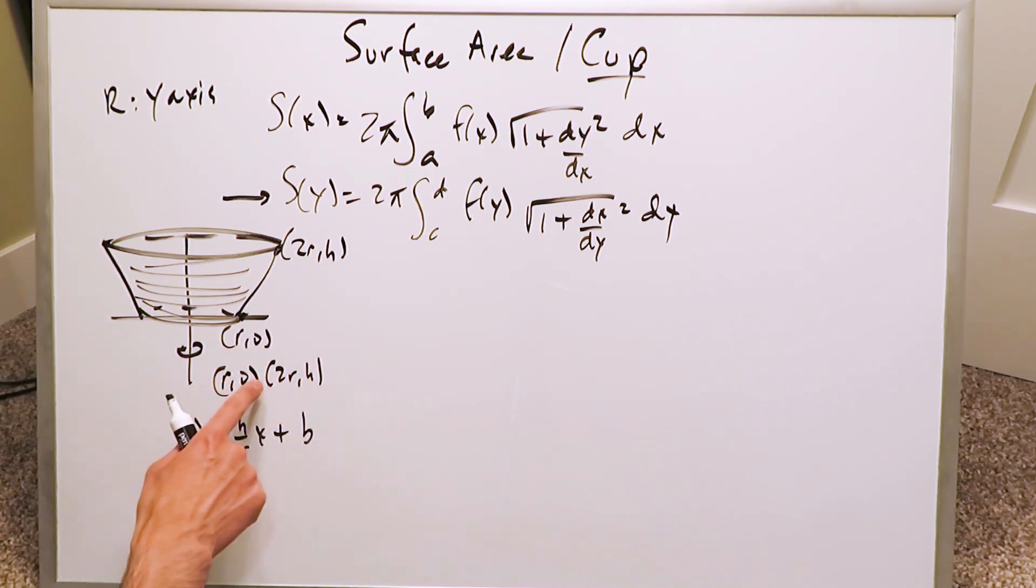Take any of these values, x and y, and I'm taking this value right here. 0 equals (h/r)·r plus b, and then b equals minus h. Now I've got my equation: y equals (h/r)x minus h, which is my y-intercept.